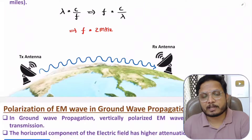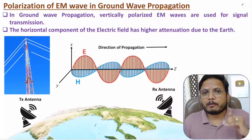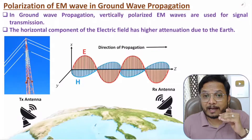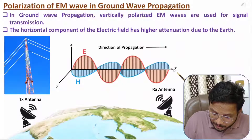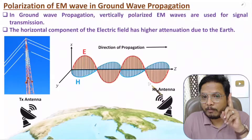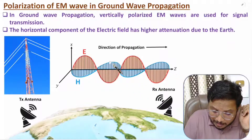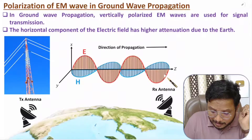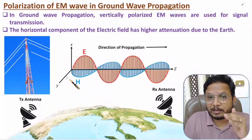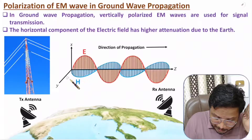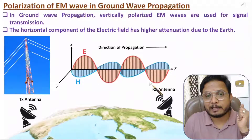Now I'll explain polarization of EM waves in ground wave propagation. Polarization means the orientation of the electric field. In ground wave propagation, we transmit a vertically polarized signal, where the electric field oscillates vertically along the direction of propagation. The reason is that the horizontal component of the electric field has higher attenuation due to earth, because earth acts like a perfect conductor. If you have a horizontal electric field component, it gets absorbed immediately by the earth. That's why we must transmit vertically polarized signals.